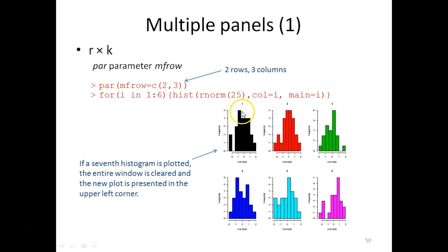As you can see, R fills them one row at a time, which is somewhat odd because it usually fills them this way but not when you're using panels. If you would draw a seventh histogram, then everything would be erased and the seventh would end up here.